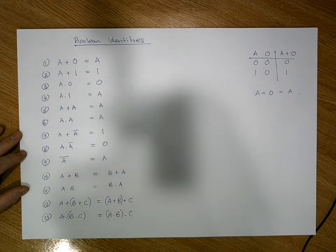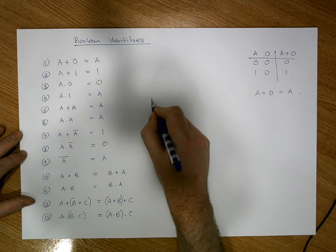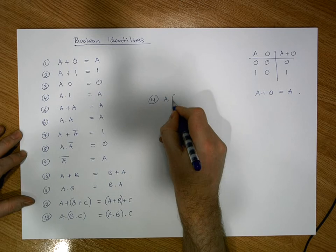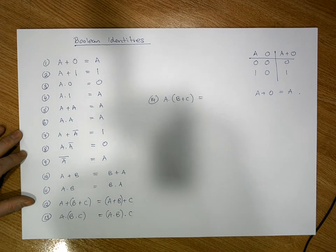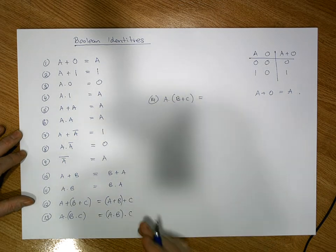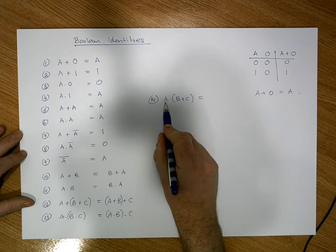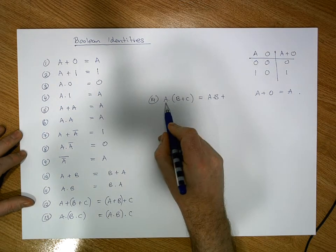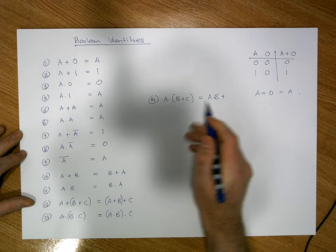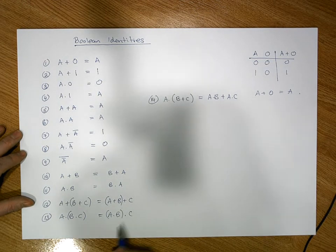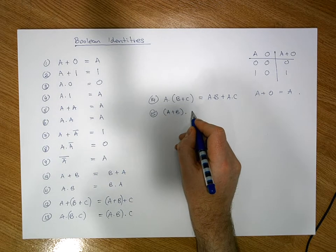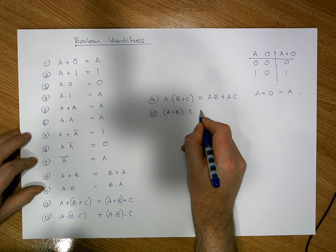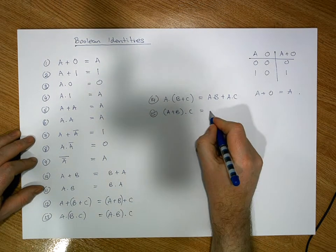There are many identities, but these are the most frequent ones we'll rely on. Identity fourteen is the distributive law: A AND (B OR C) is equivalent to (A AND B) OR (A AND C) — we multiply out the brackets, just as in regular algebra with multiplication and addition. Identity fifteen is the other form: (A OR B) AND C becomes (A AND C) OR (B AND C).